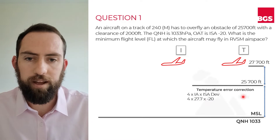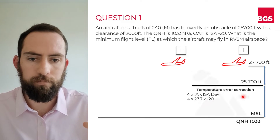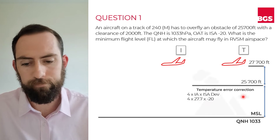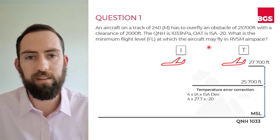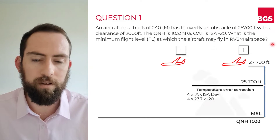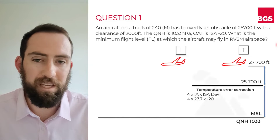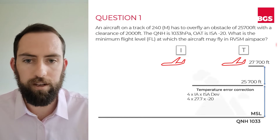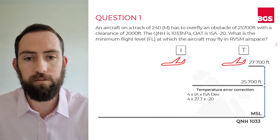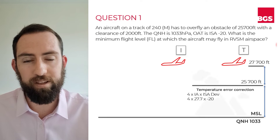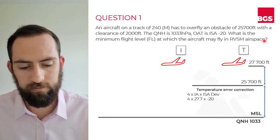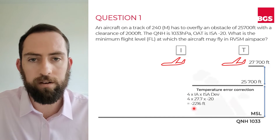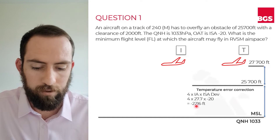What we would actually do is measure the temperature error correction within the band of atmosphere that exists between where our aircraft is and where the QNH was measured. Our question doesn't say anything about where the QNH was measured, so we're going to assume it was measured at mean sea level. Some questions might tell you the QNH came from an airfield at a certain elevation, in which case you only apply the temperature error correction for the band of atmosphere between that airfield and where the aircraft is flying. But in this case, we assume it's mean sea level. Doing that calculation, we get an answer of minus 2,216 feet.